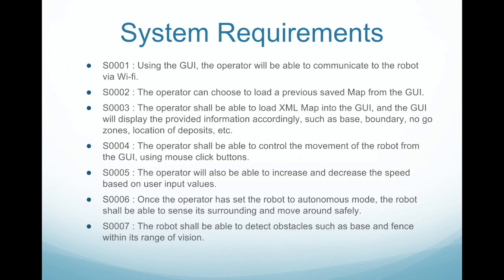In this slide we will share about the system requirements. In summary, communication between the robot and operator is done wirelessly. Previously saved maps can be loaded into the system. The operator can control the robot with mouse-click buttons. Speed of the robot can be adjusted, and the robot should ensure its own safety by detecting obstacles that it may encounter.